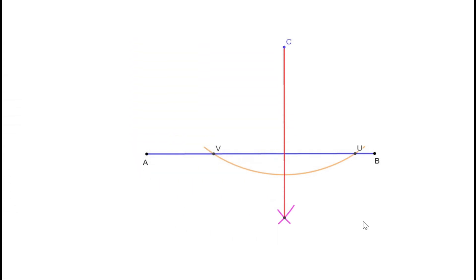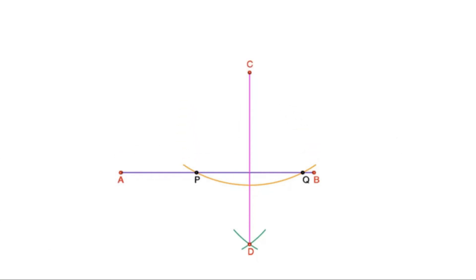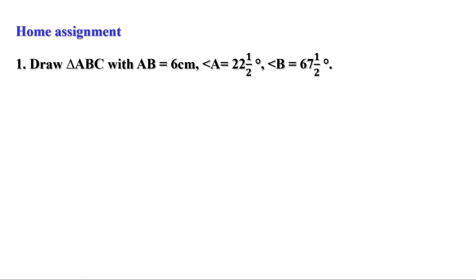In all these cases we have used the property of isosceles triangles to draw perpendiculars. We have drawn the perpendicular bisector of a line, the bisector of an angle, a perpendicular to a line through a given point on it, and a perpendicular from a point outside a line. Today we learned how to draw a perpendicular from a point outside a line. Now there is one homework: draw triangle ABC with AB equal to 6 cm, angle A equal to 22.5 degrees, and angle B equal to 67.5 degrees. In the next video we will do the remaining problems of the last page of this chapter. Till then, bye.